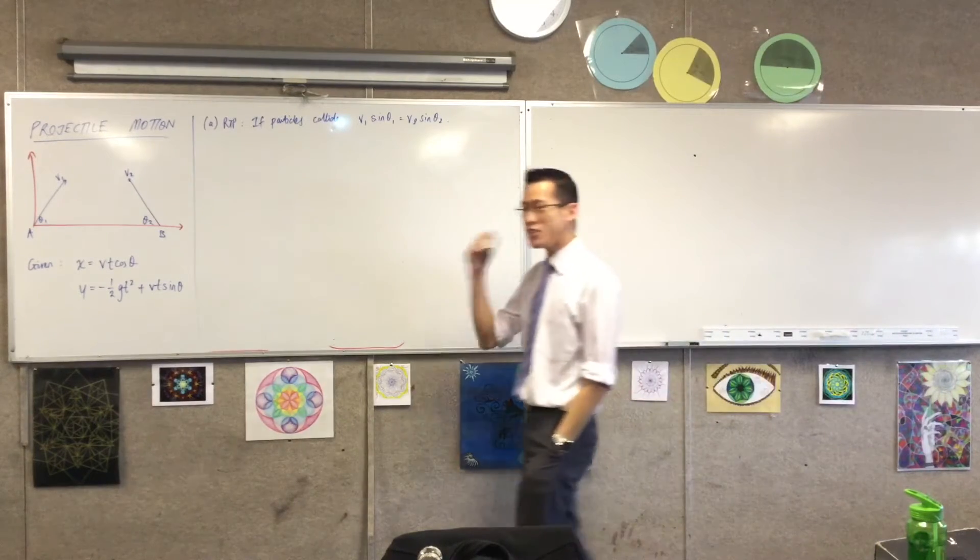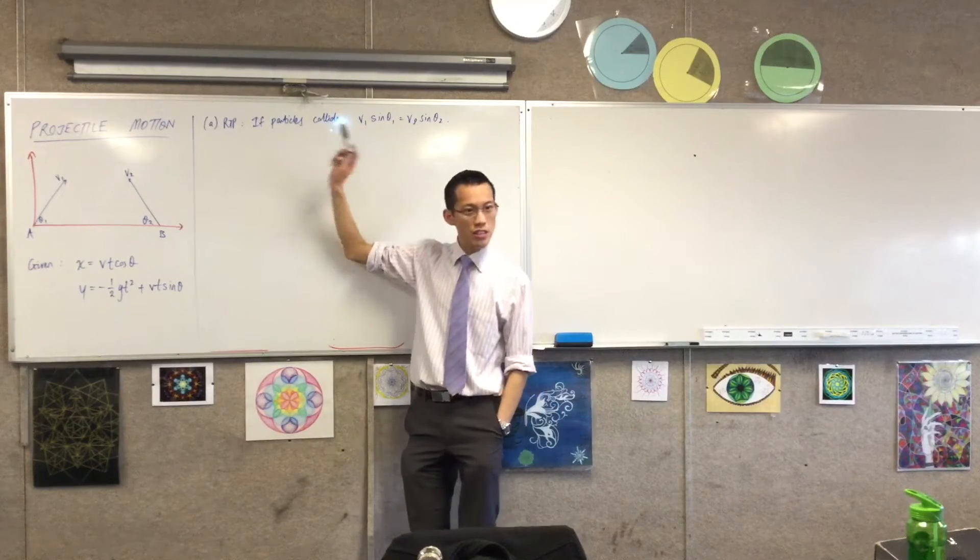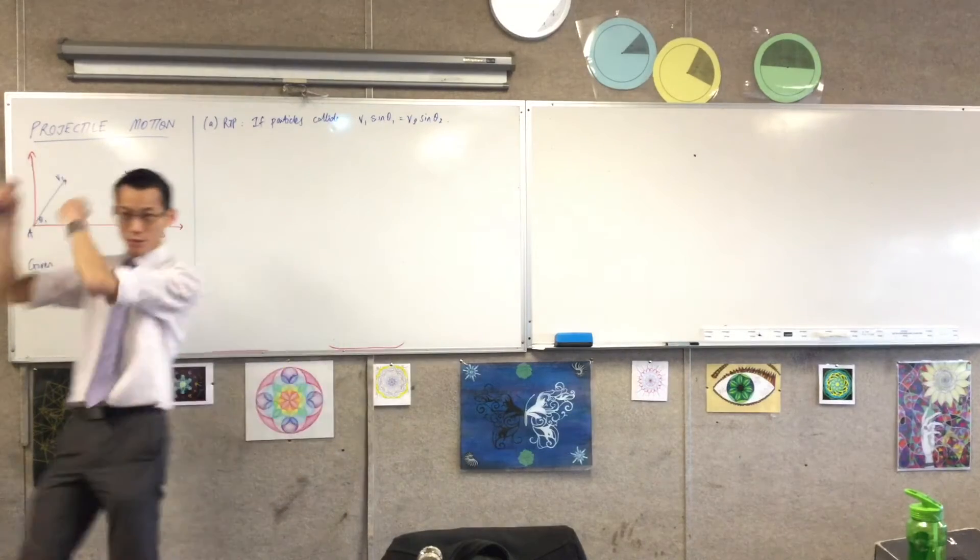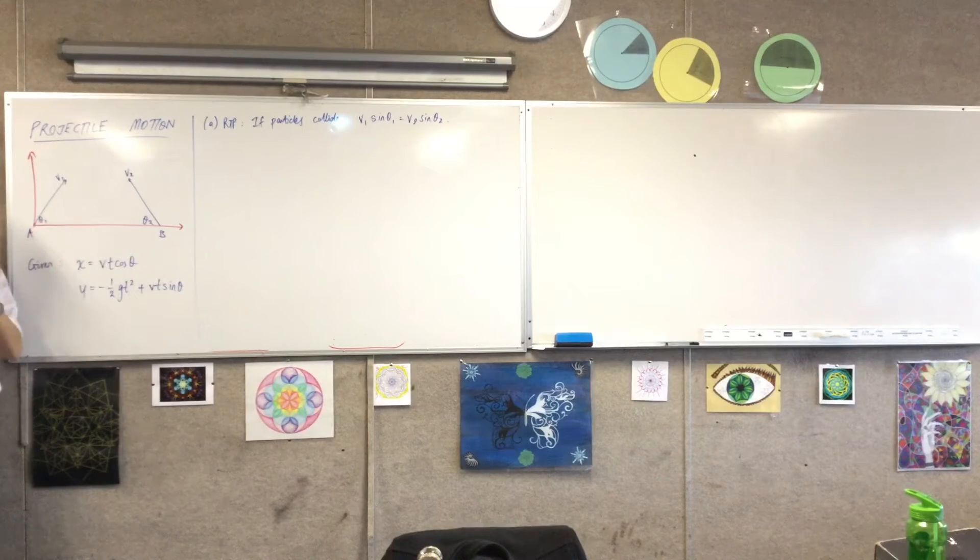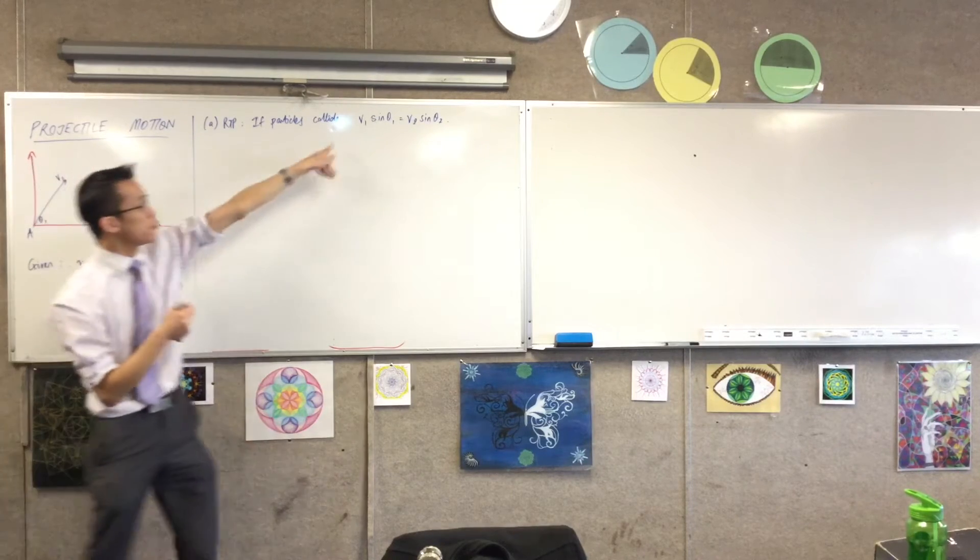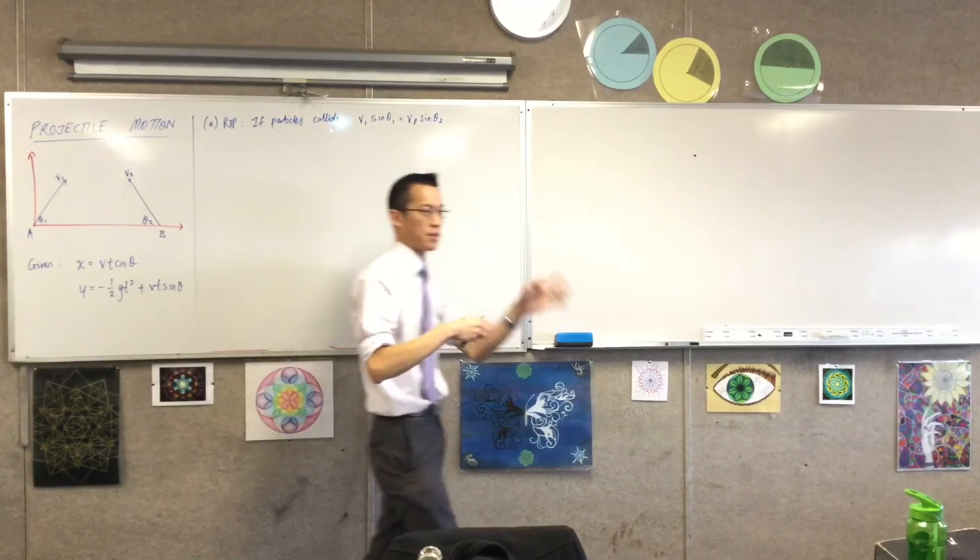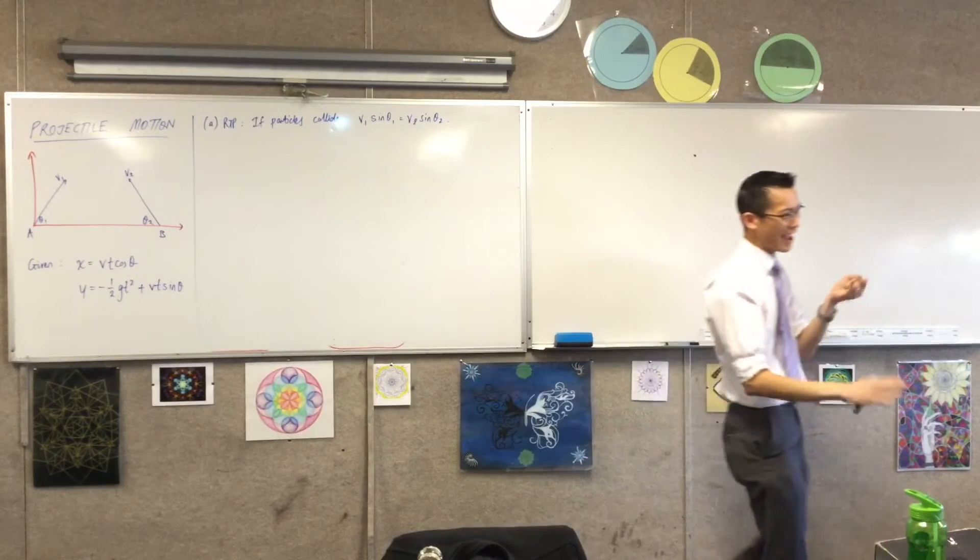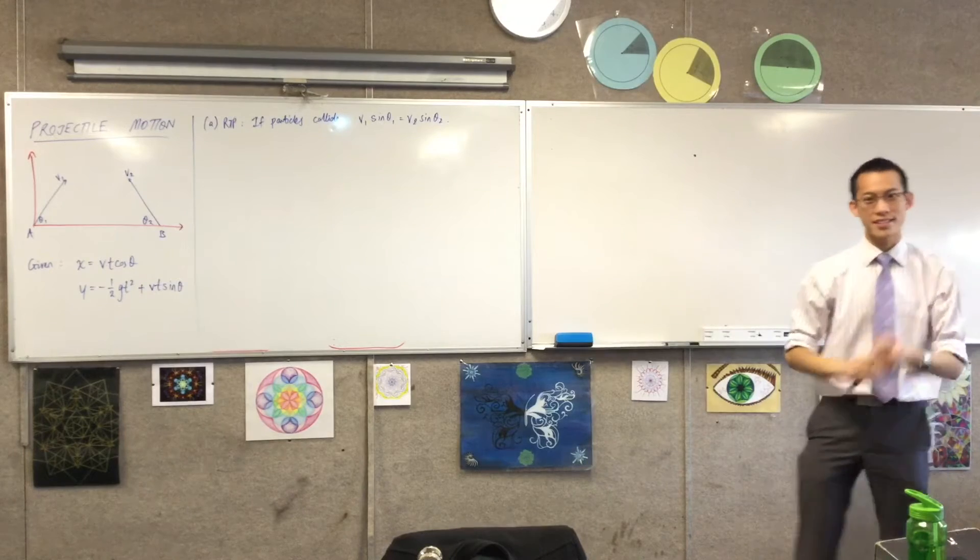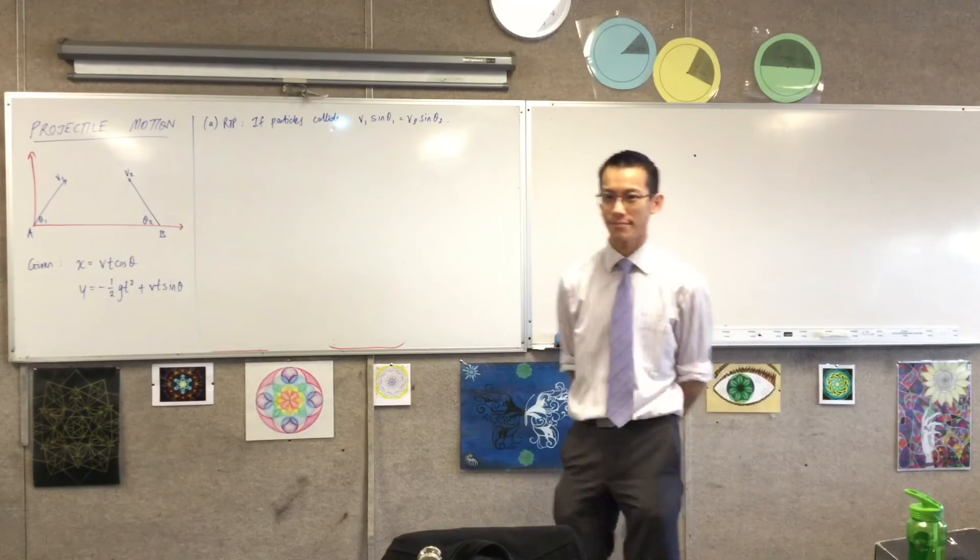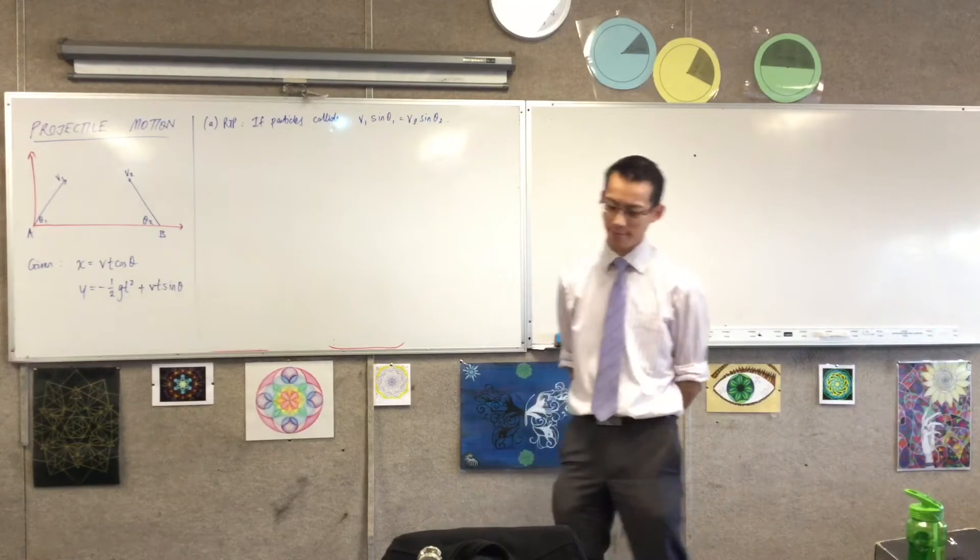if it's known that the particles do actually collide, if they do fly through the air in some particular arrangement and somewhere in the middle here they actually hit each other, then prove this result. Prove that there's this relationship between the firing angles and the firing velocities. So given the given equations, do they apply to both objectives?